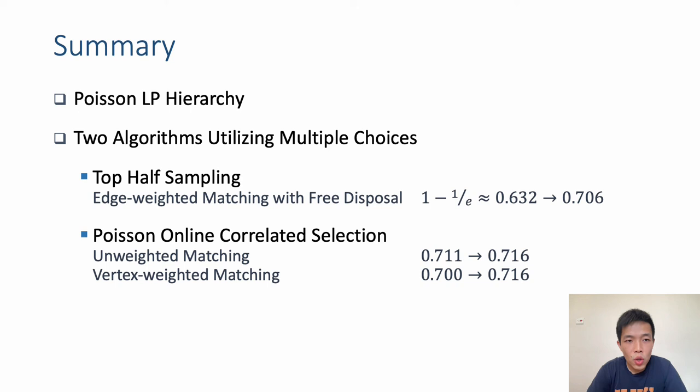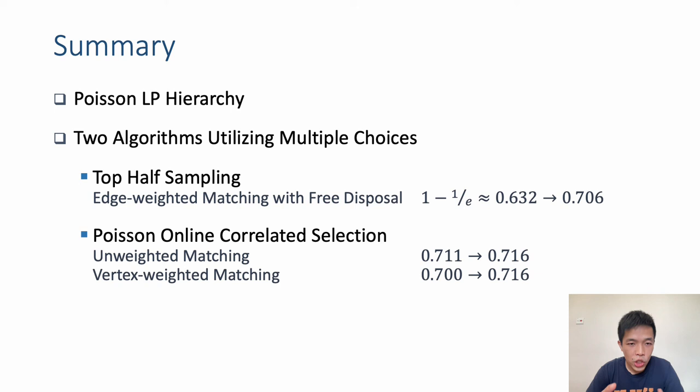To summarize, this paper introduces new ideas to utilize the power of multiple choices in online stochastic matching. Concretely, we introduced the Poisson LP hierarchy to get better and better fractional matchings as guides for online decision making, and two algorithms that utilize multiple choices: top half sampling, which breaks the 1 − 1/e barrier for edge weighted matching with free disposal; and Poisson online correlated selection, which improves the competitive ratio for unweighted and vertex weighted matching in the online stochastic model. I'll be happy to answer questions at the conference or through the email provided. Thank you.